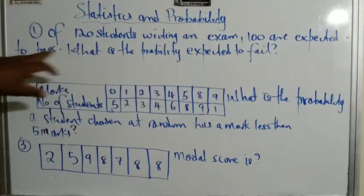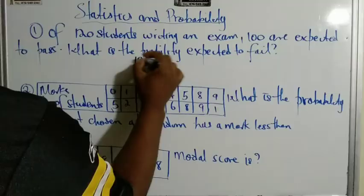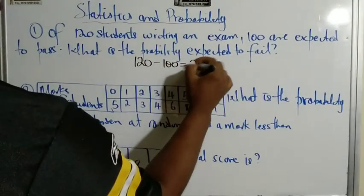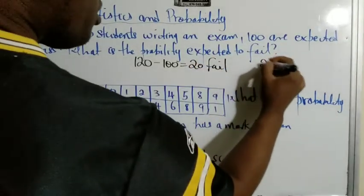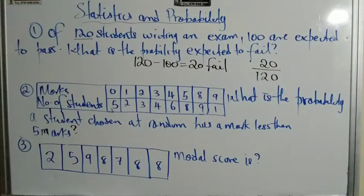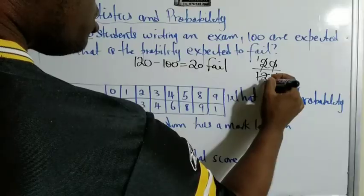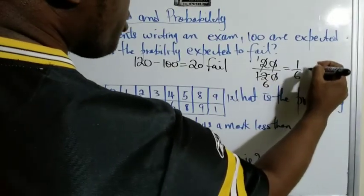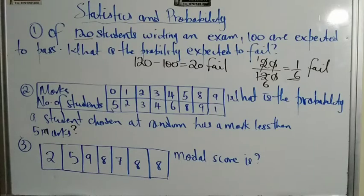Number one says: of 120 students writing an exam, 100 are expected to pass. What is the probability of a student expected to fail? So we have a total of 120 and 100 are expected to pass, which means 20 persons are expected to fail. So we take 20 out of 120, simplify that, and that gives us the probability of one sixth.